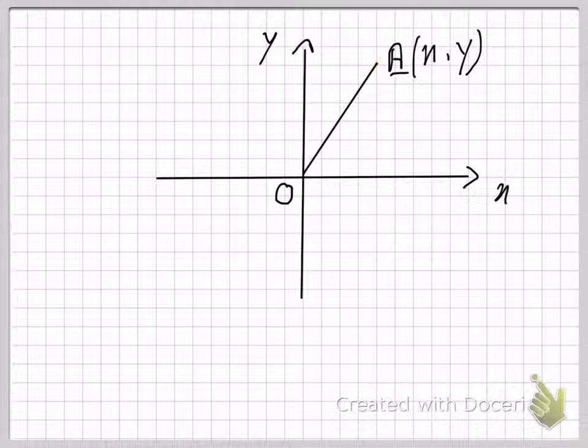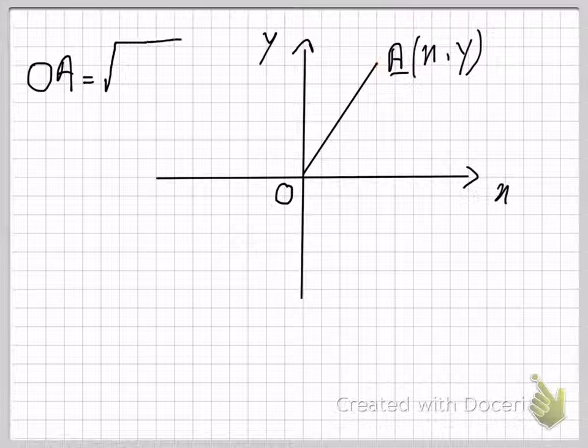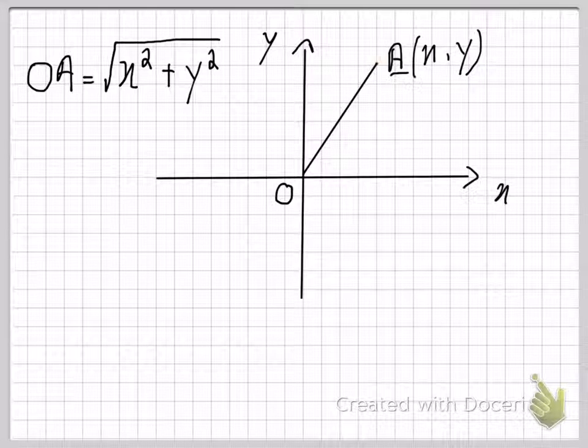The formula for calculating any point's distance from the origin is OA, representing the distance from the origin, and this will be equal to the square root of the square of the X coordinate plus the square of the Y coordinate.